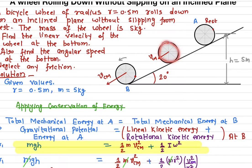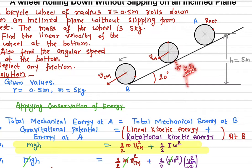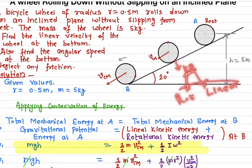At the bottom point, it has both forms of energy: the gravitational potential energy plus kinetic energy. And the kinetic energy has two parts — the rotational kinetic energy and the linear kinetic energy. We need to calculate both forms of energy.